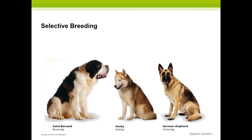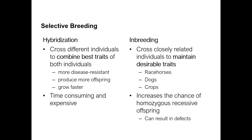There are two different methods we can implement for selective breeding: hybridization and inbreeding. The main difference is that with hybridization we're trying to take traits and combine them so that the new organism or population has the better traits, whereas with inbreeding we already have the better traits and we're trying to maintain them.